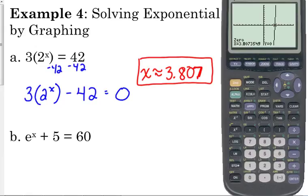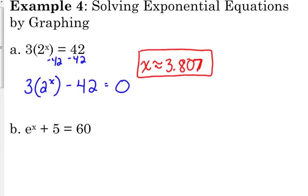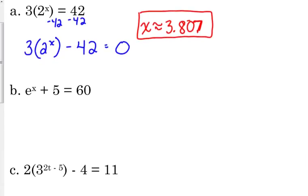Right now, you just need to be able to find the zero. Okay, let's look at example B. We've got e to the x plus 5 is equal to 60. So again, we want to make sure that that's equal to zero. So I'm going to subtract the 60. Now, this time, I actually can combine some like terms. So we can make that e to the x minus 55. We're looking for where that equals zero.